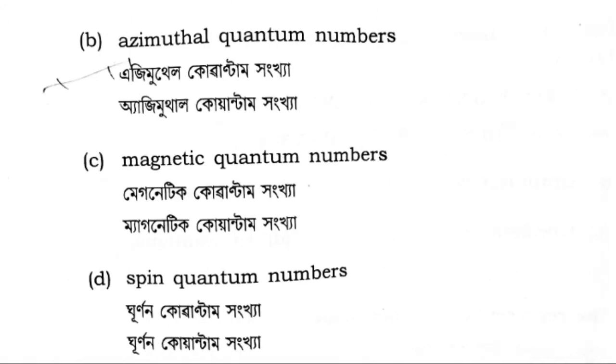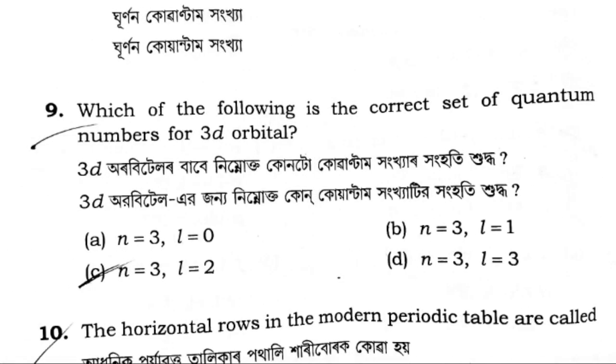The next question is: which of the following is the correct set of quantum numbers for the TD orbital?